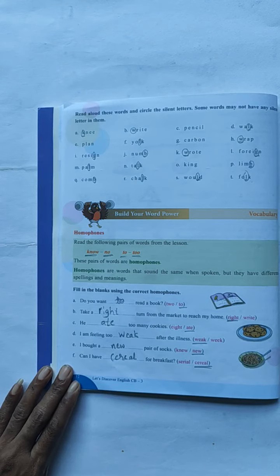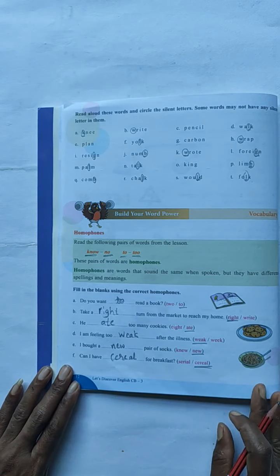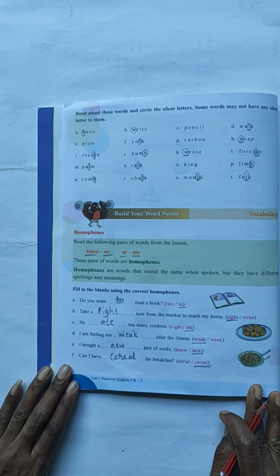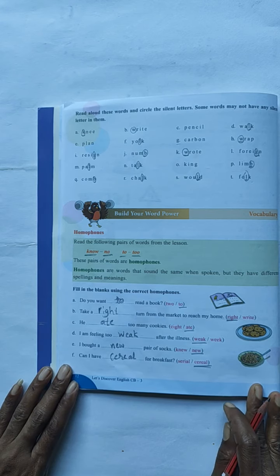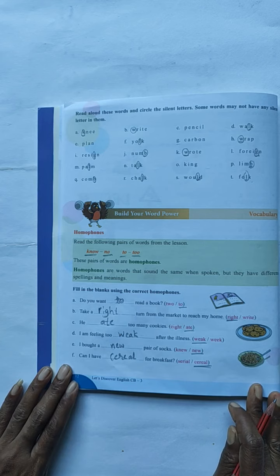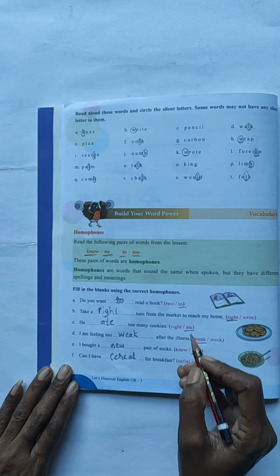That like some questions they have given below. I will read the question. Listen carefully children. Fill in the blanks using the correct homophones. Do you want dash reader book? T-W-O-2 or T-O-2. They have given here two answers in the bracket. You have to choose only one answer. Which one is correct? You have to write in given space.